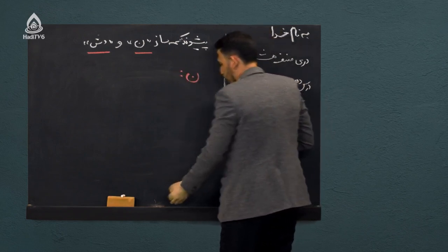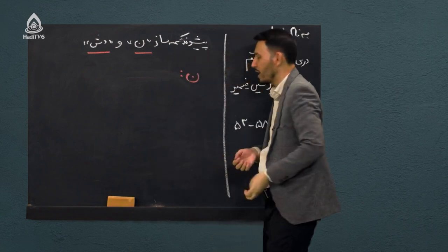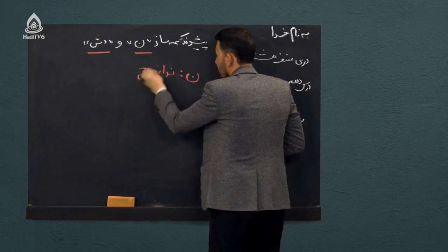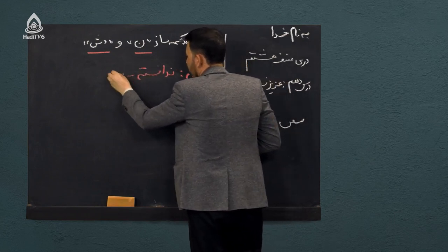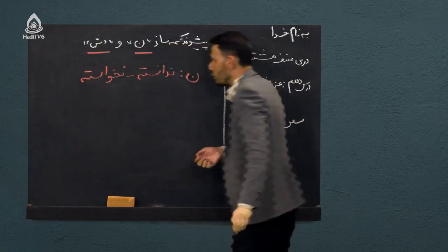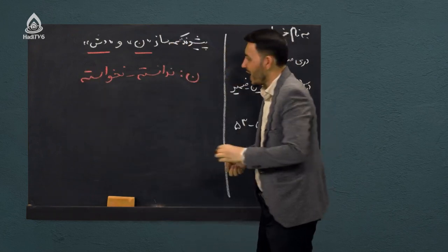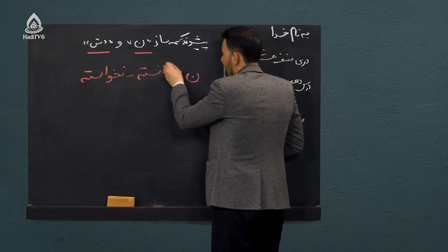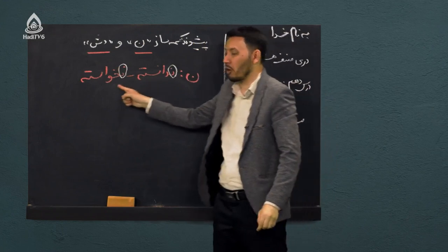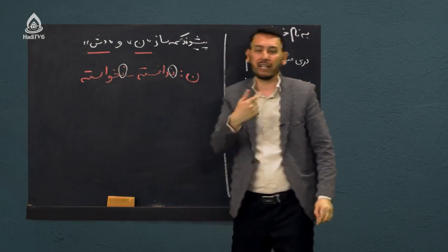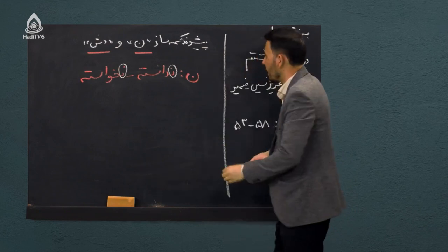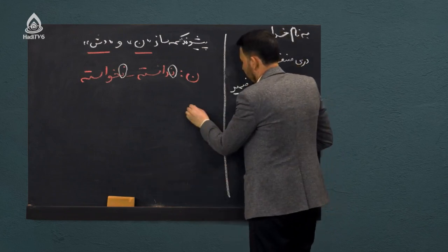برای حرف «نون» اگر بخواهیم بسازیم، مانند «ندانسته» و «نخواسته». بر سر کلمه‌های «دانسته» و «خواسته» حرف «نون» را اضافه کردیم، شده «ندانسته» و «نخواسته» - یک کلمه نو، یک کلمه جدید با معنای تازه. بخش دوم مربوط به «دوش» است.